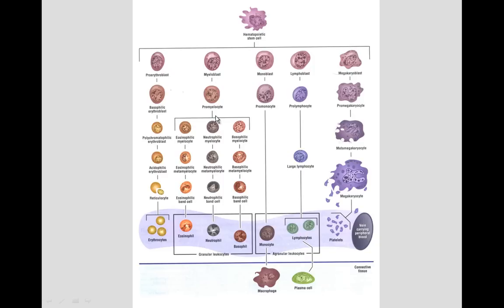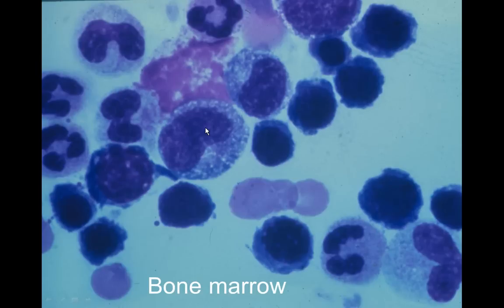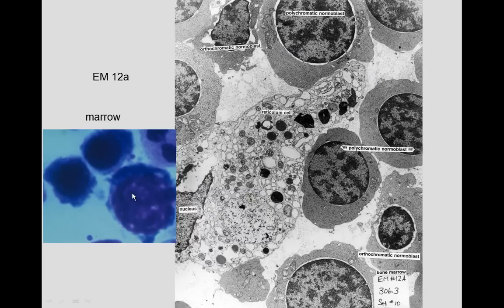The early cells of these lineages are spherical, and later ones are more oval in shape. Looking at bone marrow, we can see cells with spherical nuclei — several here — that are all part of the red blood cell line. We can see a larger one, like a polychromatic normoblast, and other normoblasts in the field. In electron microscopy, we can see a nurse cell with its nucleus and a normoblast associated with it.